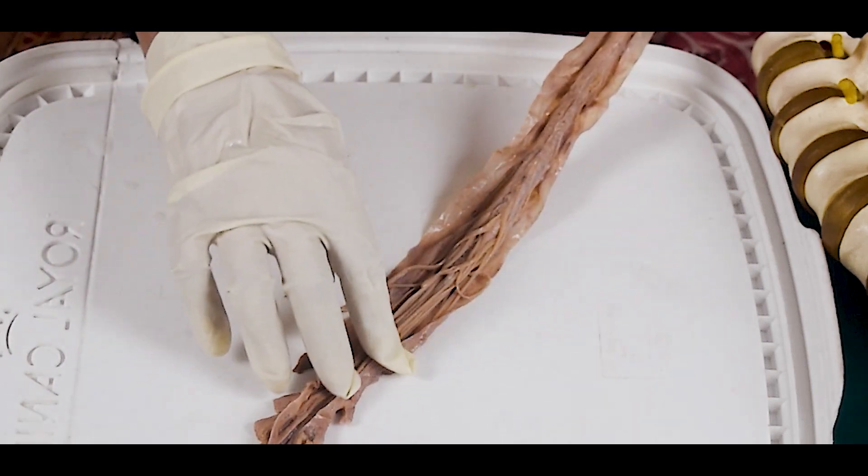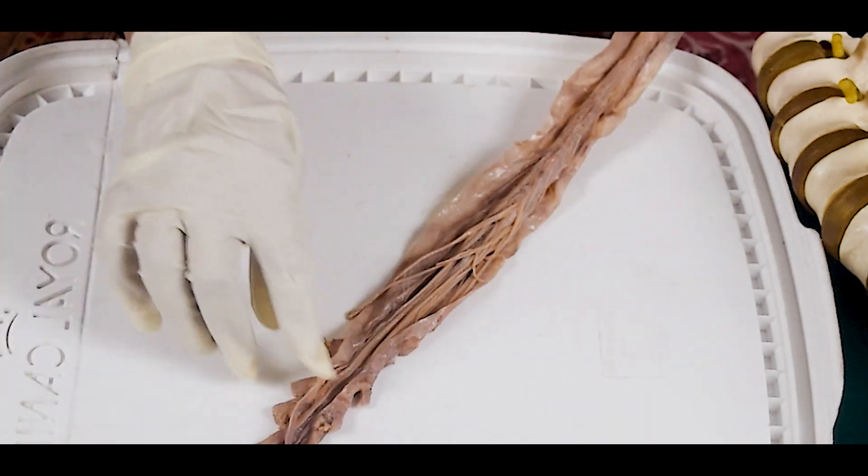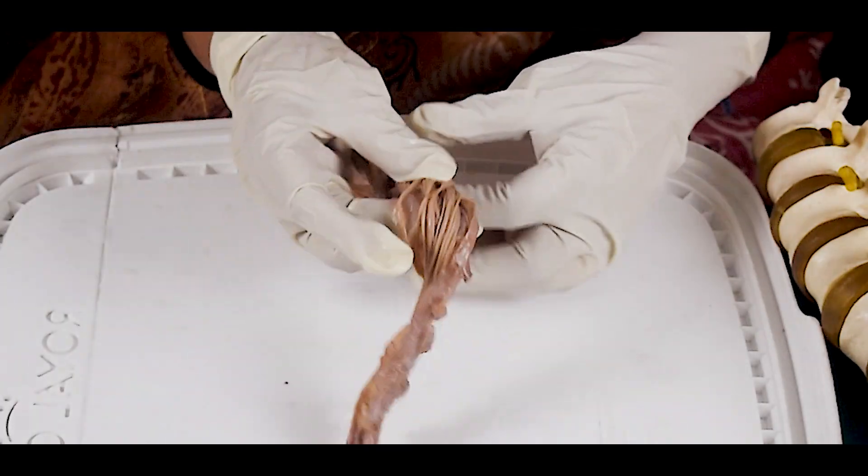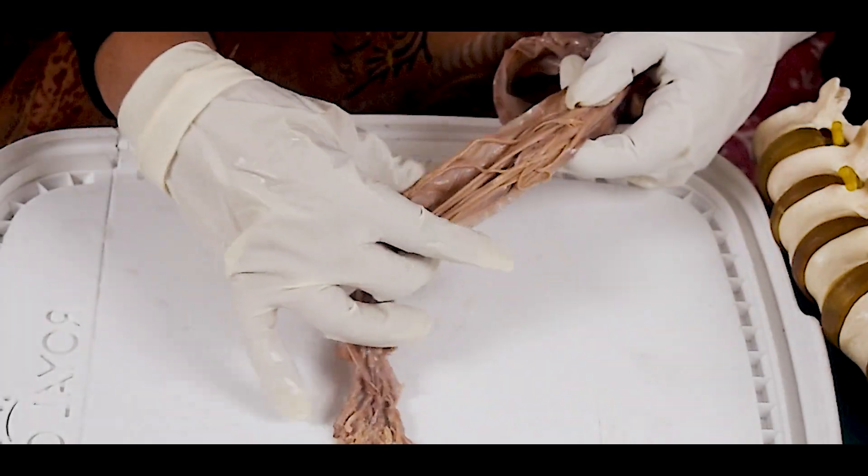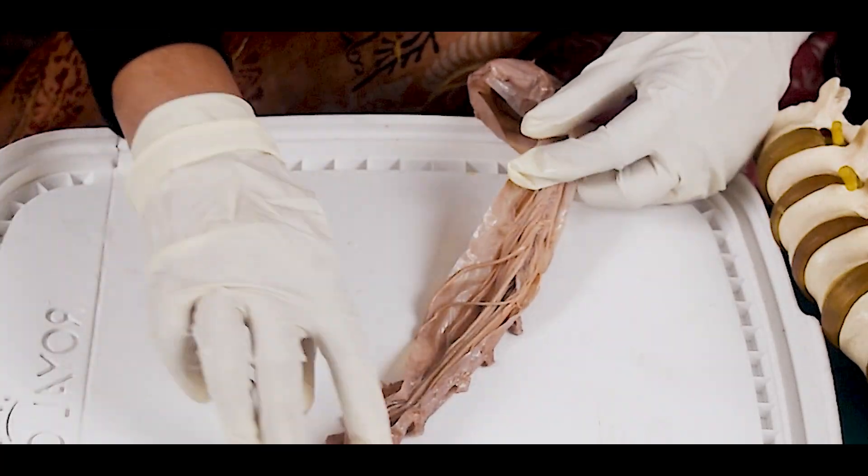L1-L5 nerves, the five sacral nerves, the coccygeal nerves all come out from the branches. And this portion of branches is known as the cauda equina. Cauda means tail and equina means horse.